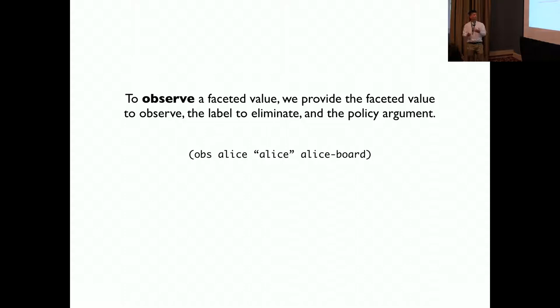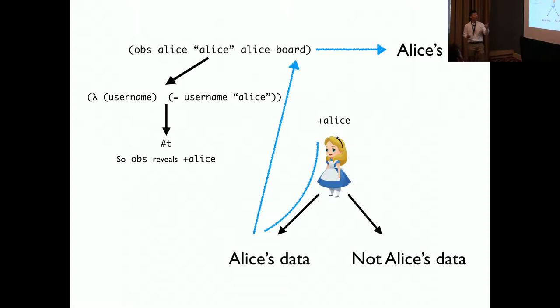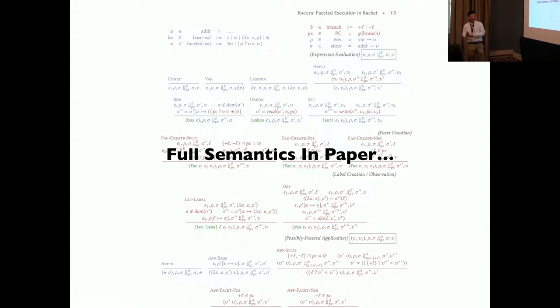To observe facet value, we provide the facet value to observe the label to eliminate the policy argument. ALICE here is the label, and ALICE with the quotation mark is the policy argument, and s4 is the facet value to be observed. In this case, since it matched with the label's predicate and returned true, once the observe form knows that ALICE is indeed ALICE, it extracts the private data from ALICE board and returns ALICE data.